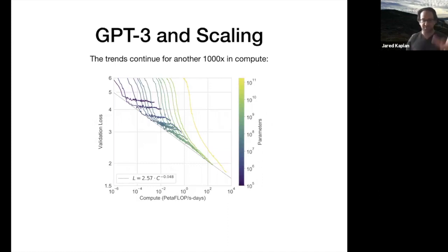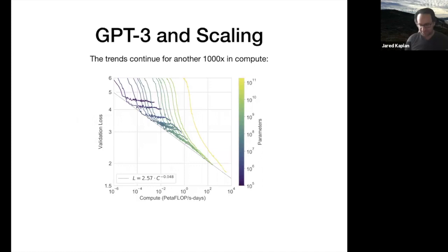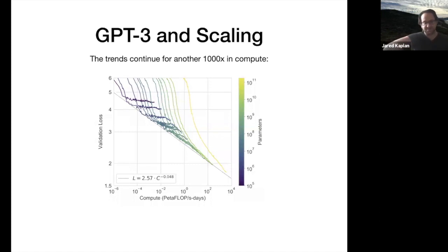In the first paper we wrote on this subject, we stopped at models with about a billion parameters. Then there was the GPT-3 series going up to about 175 billion parameters. The compute scaling trend seems to effectively continue for roughly three more orders of magnitude in compute budget. GPT-3 may be underperforming the trend very slightly, but it's hard to tell from one curve. The conclusion is that scaling laws appear to continue.